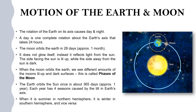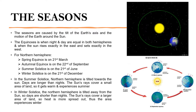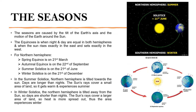When it is summer in the Northern Hemisphere, it is winter in the Southern Hemisphere and vice versa. As we saw on the previous slide, the seasons are caused by the tilt of the Earth's axis and the motion of the Earth around the Sun.